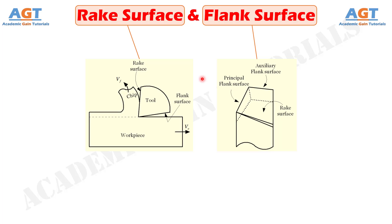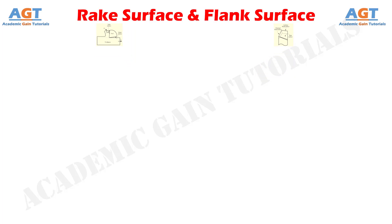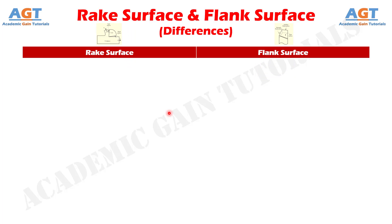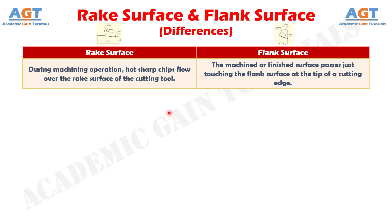Basically, the cutting edge forms at the intersection of rake surface and flank surface. Let's look into the basic differences between rake surface and flank surface in a tabular form. Difference number one: during machining operation, hot sharp chips flow over the rake surface of the cutting tool, whereas the machined or finished surface passes just touching the flank surface at the tip of a cutting edge.